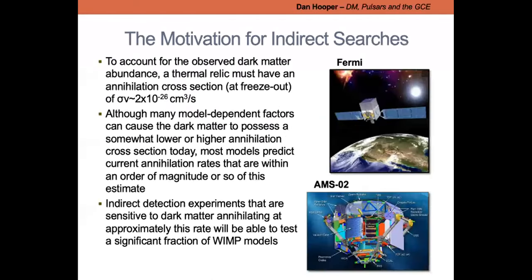Let me start with some very general words motivating the whole indirect detection program. In contrast to some other efforts to search for dark matter particles, there is a close relationship between the origin of dark matter particles in the form of WIMPs in the early universe and their prospects for detection with gamma-ray and cosmic-ray detectors. If you have a particle that was in equilibrium in the early universe and froze out to produce the observed dark matter relic abundance, the cross section for annihilations at freeze-out has to be about 2×10⁻²⁶ cm³/s.